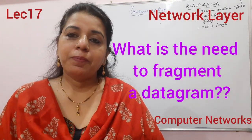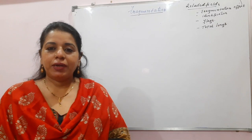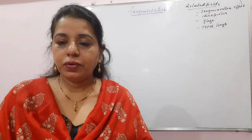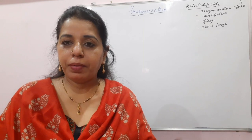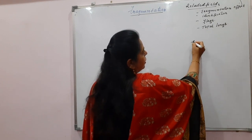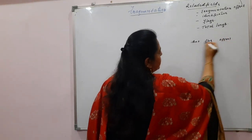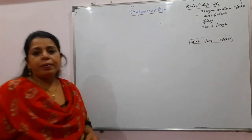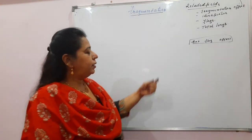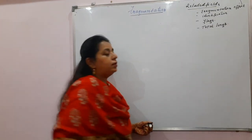Welcome to this video lecture series on computer networks. Today's topic is fragmentation. In my previous video lecture, I explained the different fields in the IPv4 header format. In the second row of the packet format, the first field is identification, then flags and fragmentation offset. These three fields are related to fragmentation, and today I will explain the significance of each of these fields with an example.